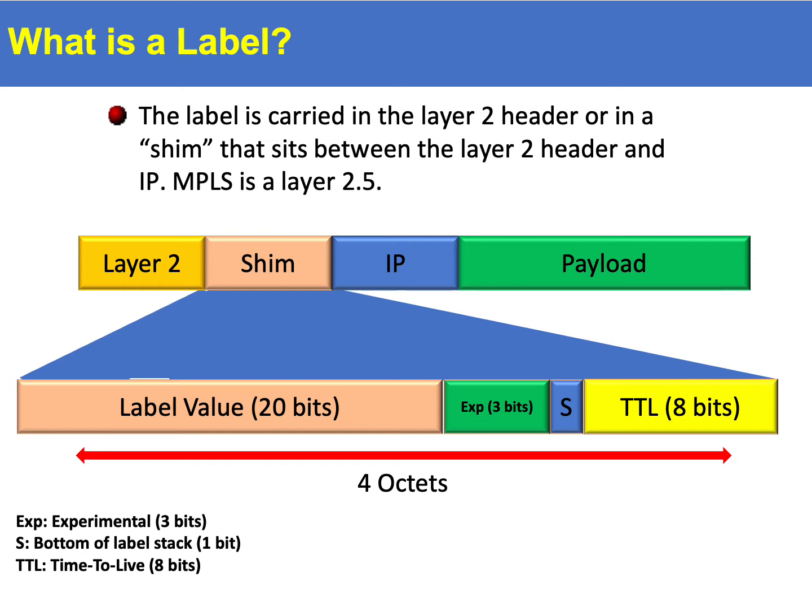Then finally we come to the TTL or time to live. This basically serves the same function as in IP and will stop the packet or the label going into an endless loop if the TTL is decremented down to zero.